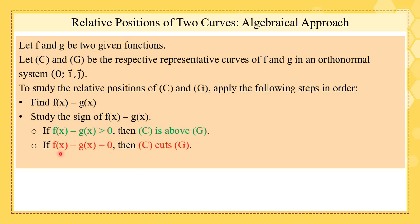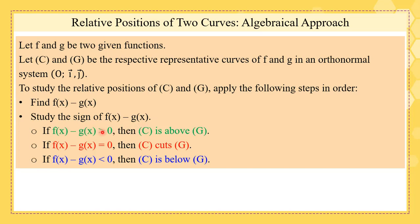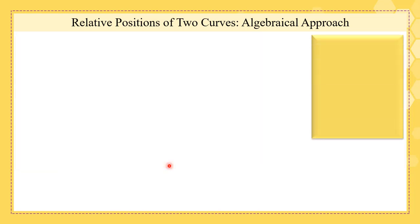If F of X minus G of X equals 0, we can say that C cuts G. And if F of X minus G of X is less than 0, we can say that C is below G. So the relative positions of C and G depend on the sign of F of X minus G of X: greater than 0 means above, equal means cuts or intersects, and less than 0 means below. This is what we have to remember.